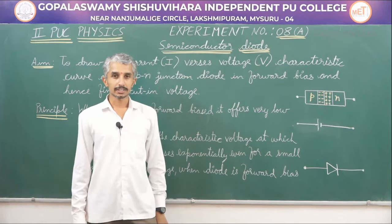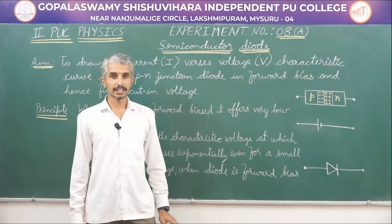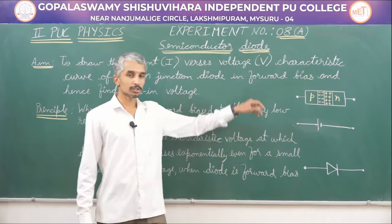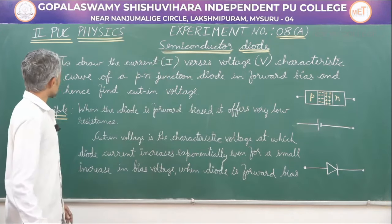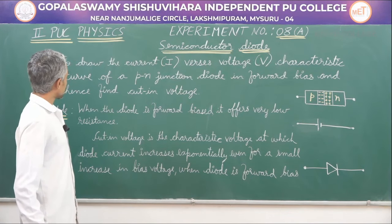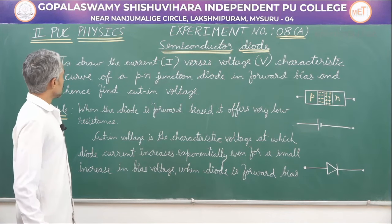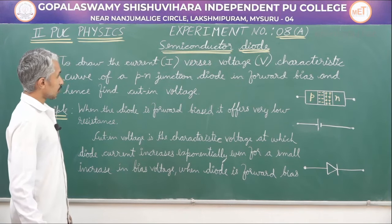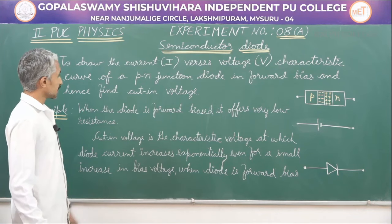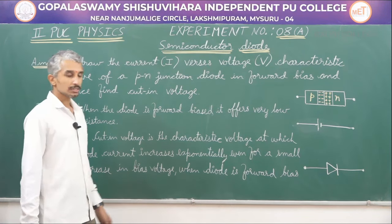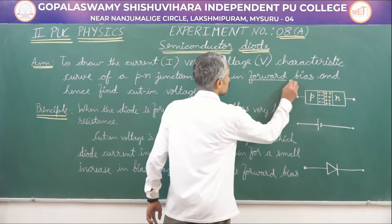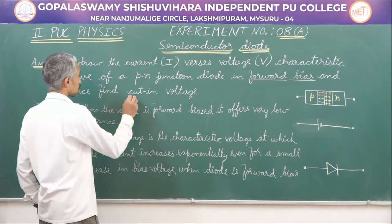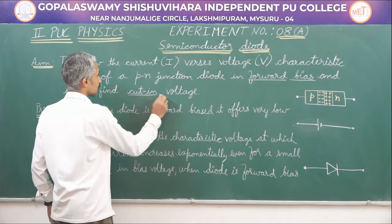In semiconductor, we have both forward bias and reverse bias. We will look into only the forward bias for today. The aim is to draw the current versus voltage characteristics curve of a PN junction diode in forward bias and hence find cut-in voltage. We will now understand what we mean by forward bias and what we mean by cut-in voltage.